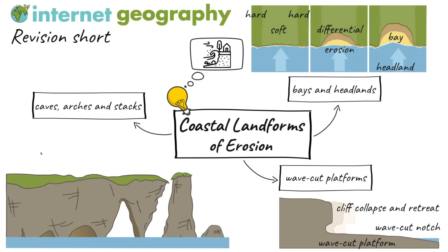Erosion continues, leading to the formation of a cave. The cave increases in size as the refracted waves concentrate their energy on the sides of the headlands, further enlarging the cave. Eventually, the cave erodes through the headland to form an arch. Wave-cut notches widen the arch. Weathering and erosion weaken the roof of the arch until it collapses under its own weight, leaving a column of rock called a stack.